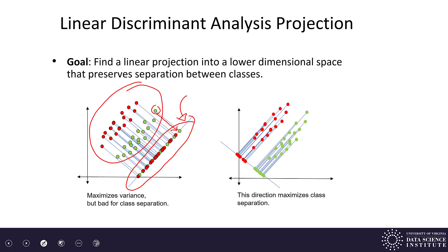That first plot is along the lines of what PCA does — it projects in the direction of greatest variation of the total data. The plot on the right-hand side is what we're looking for: we take our two data sets and project onto a different line, and we see it preserves the separation between the classes. Now we can view our data in one dimension and see the separation between classes.